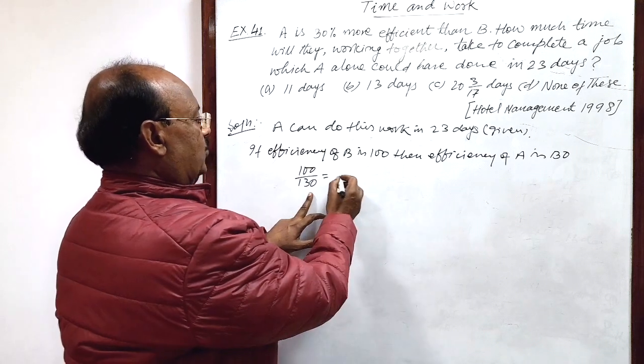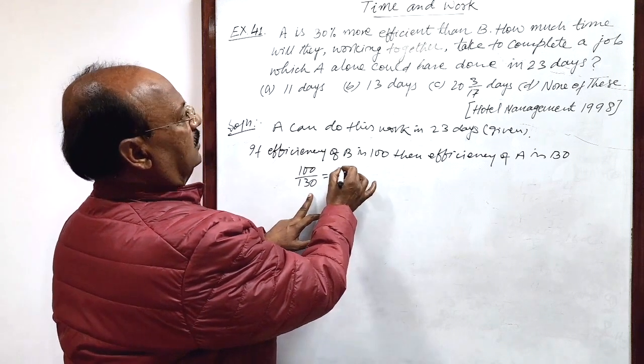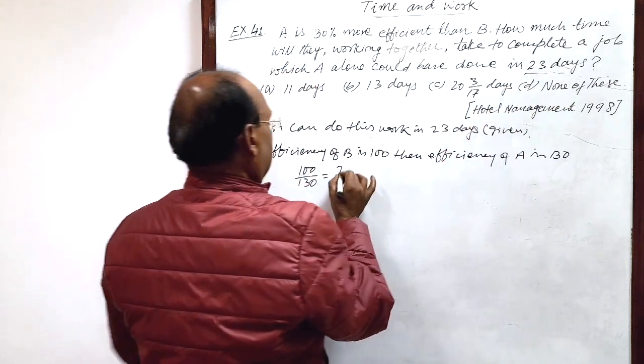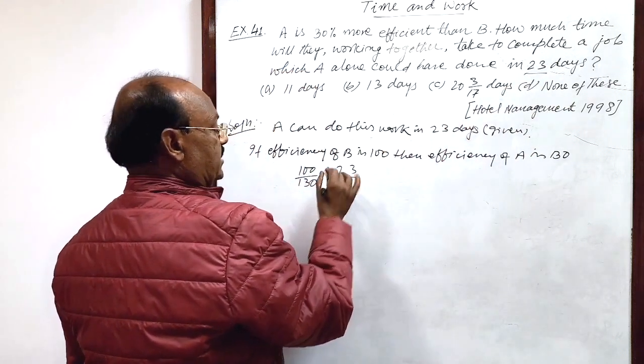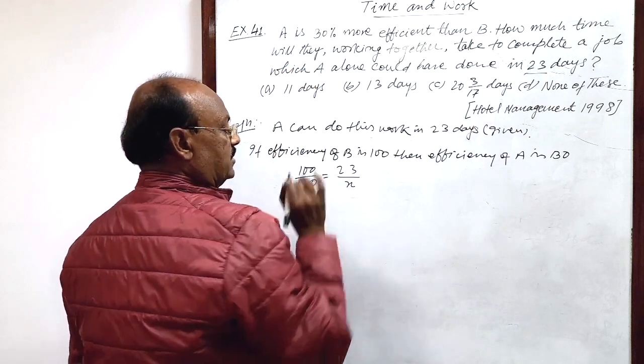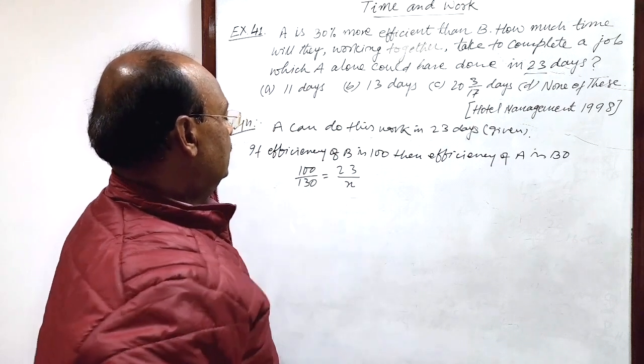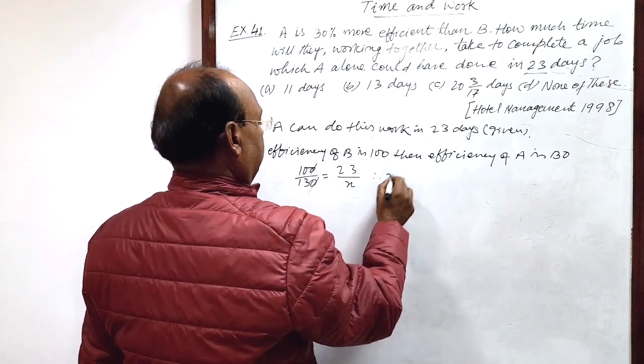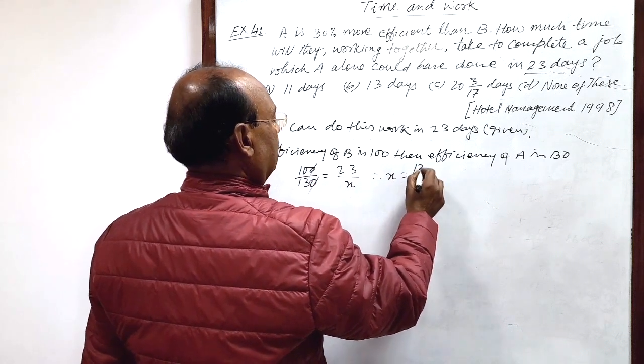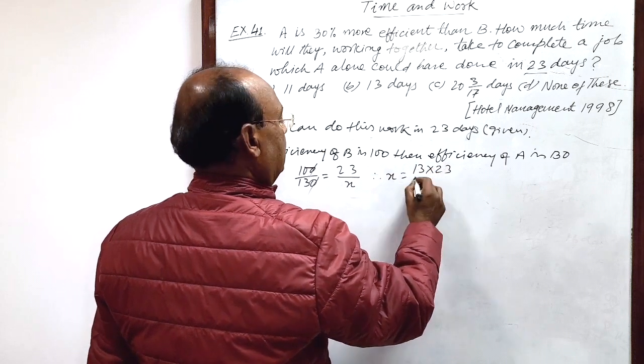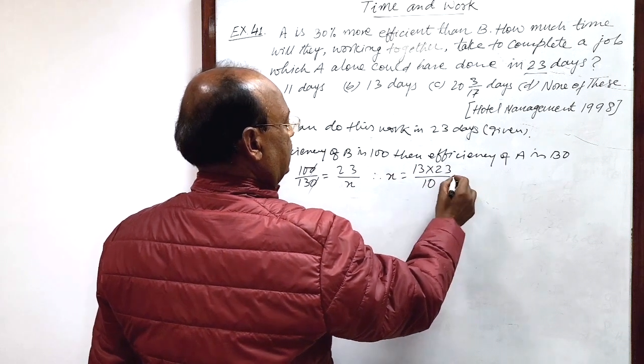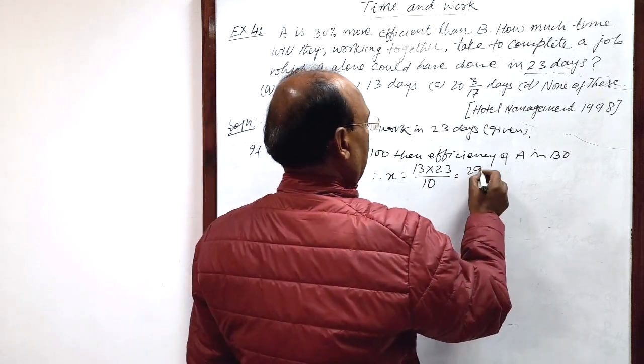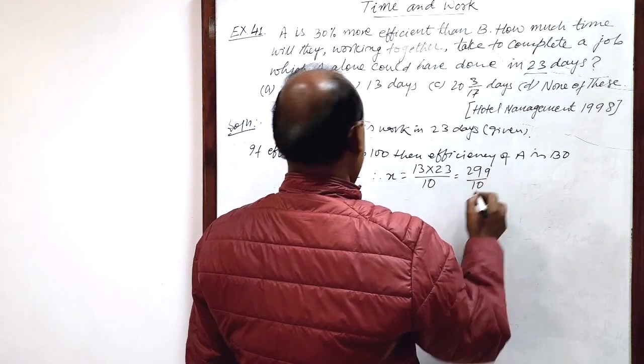So number of days required by A is 23 days, and let number of days required by B be X. By calculating it we can get the value of X. Therefore X is equal to 13 into 23 divided by 10, and this is equal to 299 by 10.